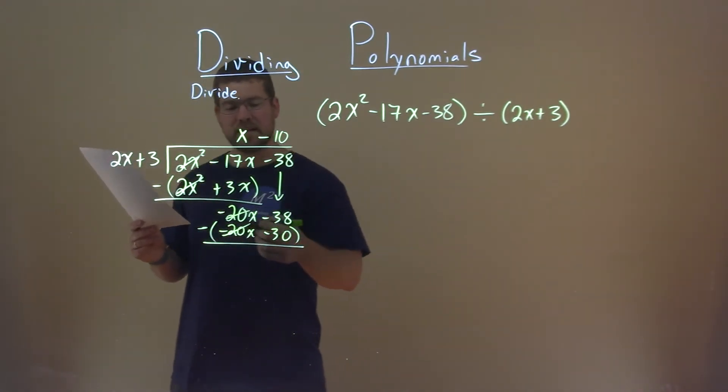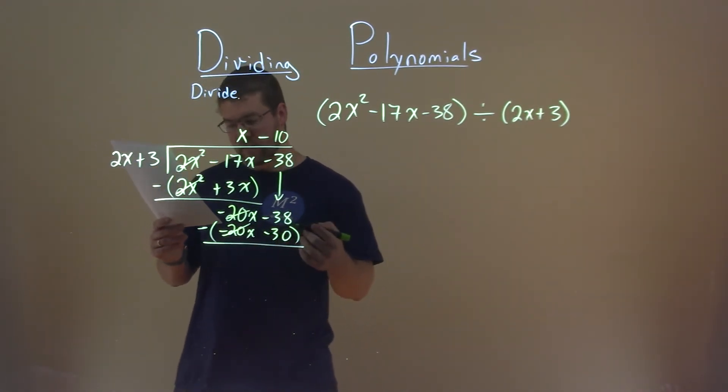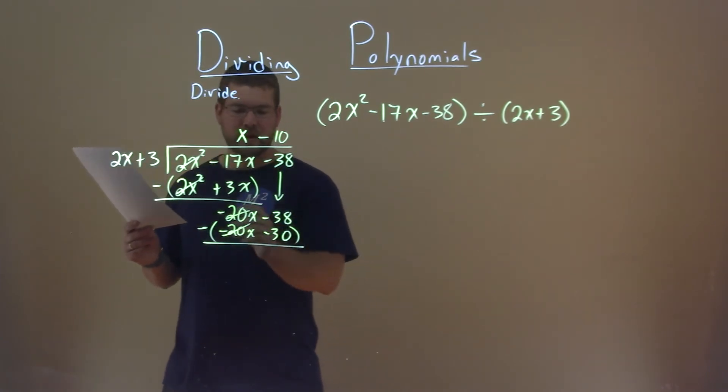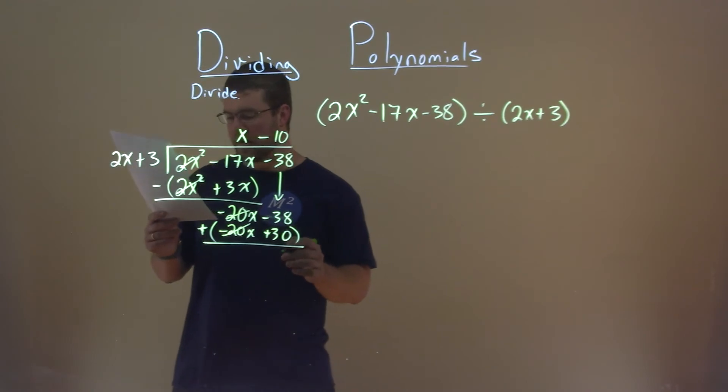Negative 38 minus a negative 30 is like adding a positive 30. So we need to plus a positive if you want, like right here. Negative 38 plus 30 is negative 8, and that's our remainder.